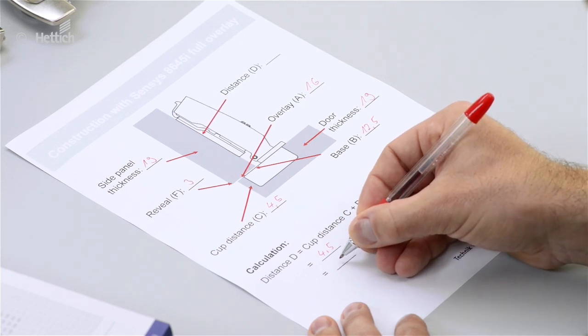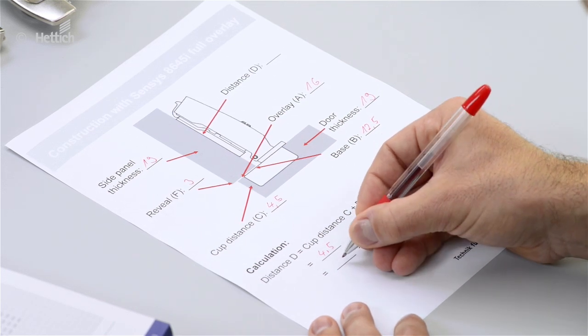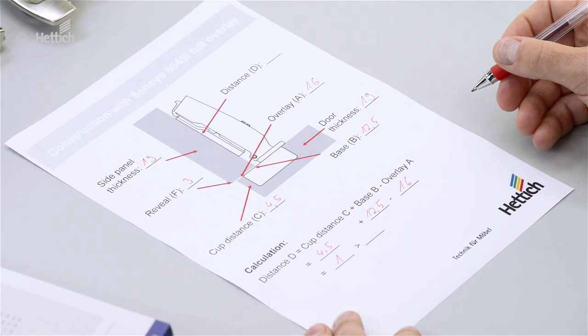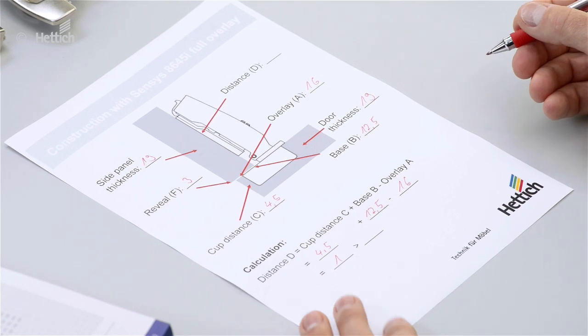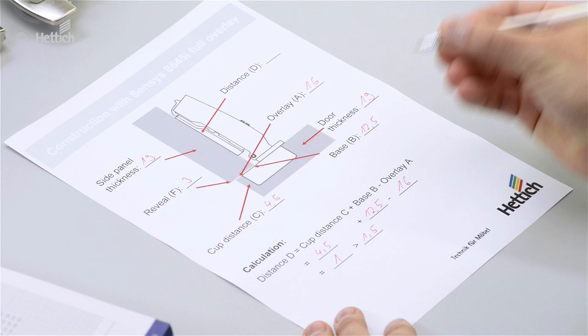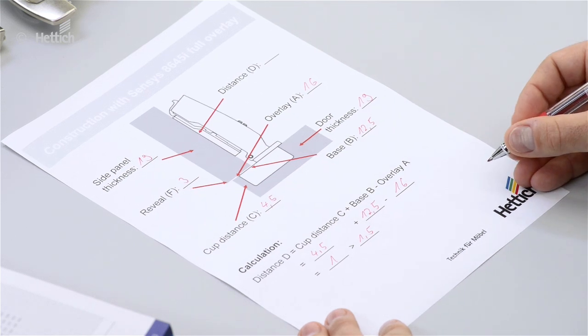So we have a mounting plate distance of 1mm. But that doesn't exist so we go to the next bigger size, that's 1.5mm. The resulting difference of 0.5mm has to be adjusted with the overlay adjustment screw integrated in the hinge.